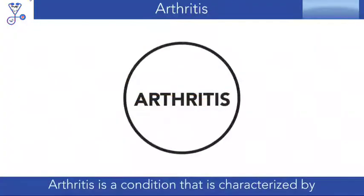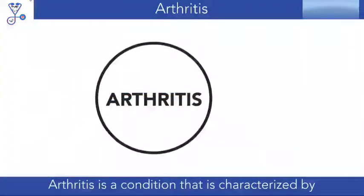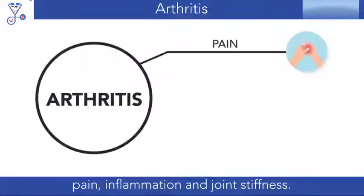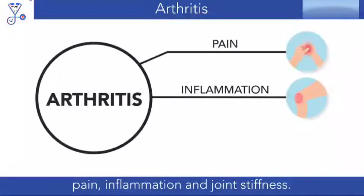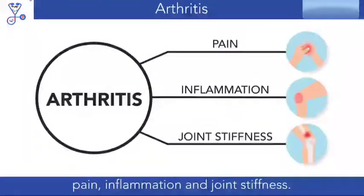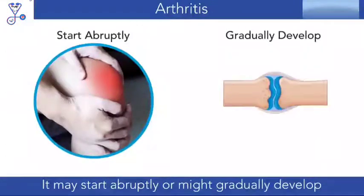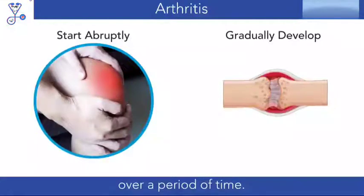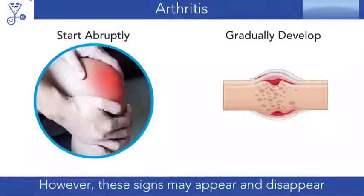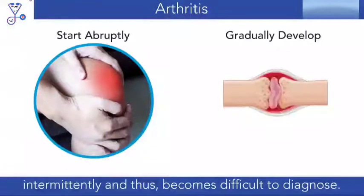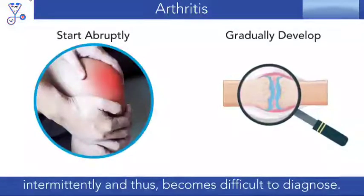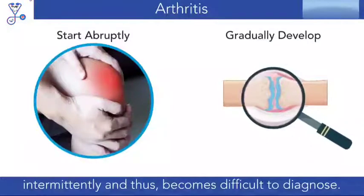Arthritis is a condition characterized by pain, inflammation, and joint stiffness. It may start abruptly or might gradually develop over a period of time. However, these signs may appear and disappear intermittently, and thus it becomes difficult to diagnose.